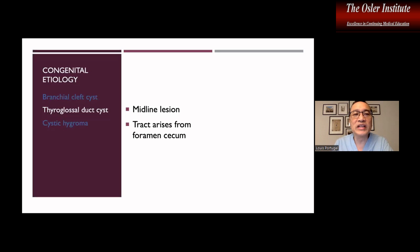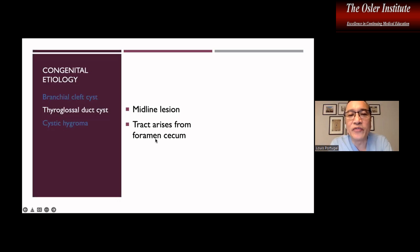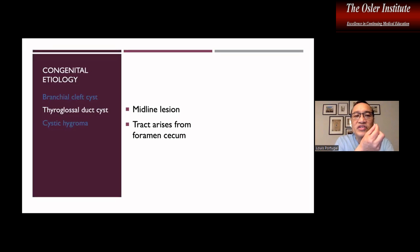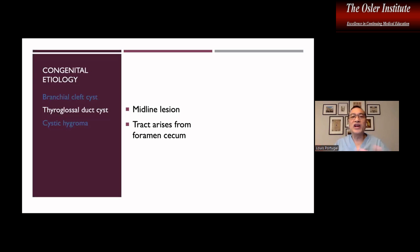The thyroglossal duct cyst is more midline, unlike the branchial cleft cyst which is lateral. Its tract arises from the foramen cecum — the head and neck version, not the GI version — which is located at the base of the tongue. That foramen cecum gives rise to the duct, which then travels down through the hyoid bone. The thyroglossal duct is embryologically responsible for the development of the thyroid.